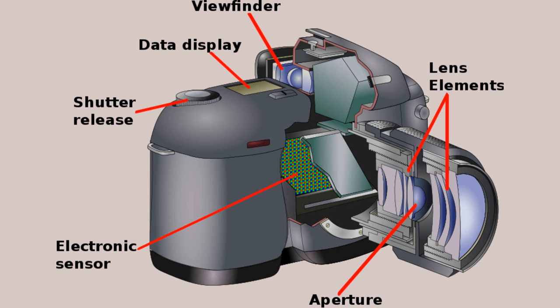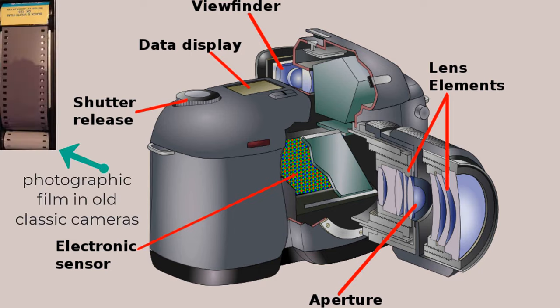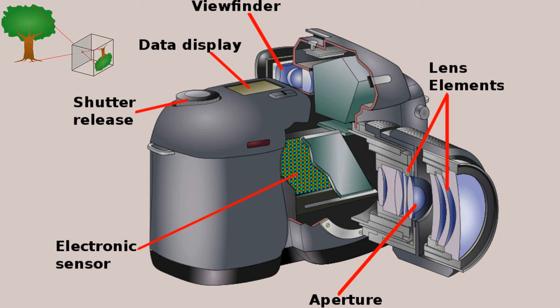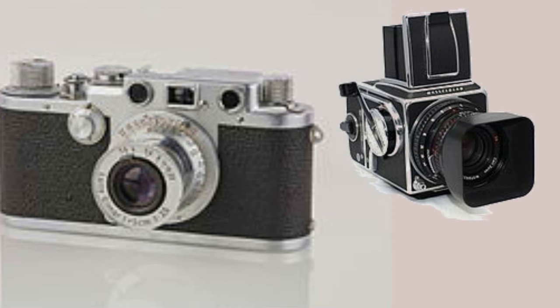A camera is an optical instrument that captures a visual image. At their most basic, cameras are sealed boxes, the camera body, with a small hole, the aperture, that allows light in to capture an image on a light sensitive surface, usually photographic film or a digital sensor. Cameras have various mechanisms to control how the light falls onto the light sensitive surface. Lenses focus the light entering the camera, the size of the aperture can be widened or narrowed to let more or less light into the camera, and a shutter mechanism determines the amount of time the photosensitive surface is exposed to the light. The still image camera is the main instrument in the art of photography and captured images may be reproduced later as a part of the process of photography, digital imaging, or photographic printing.